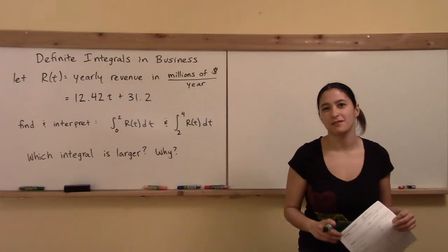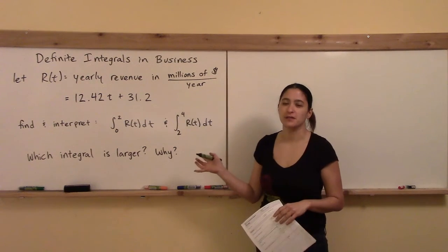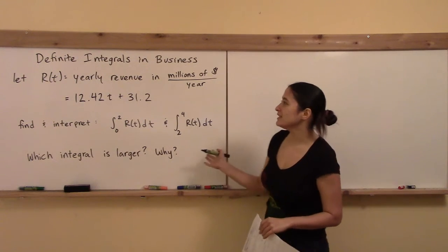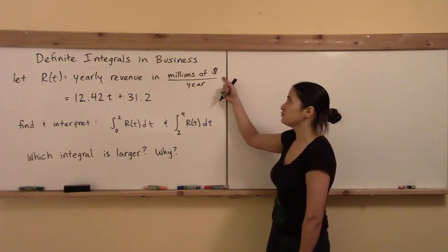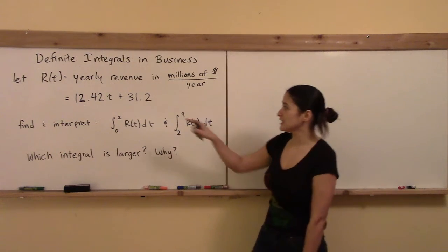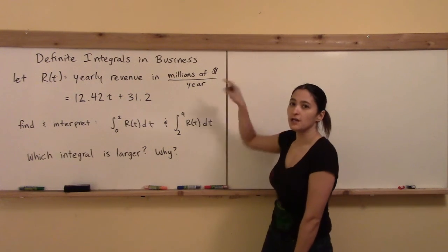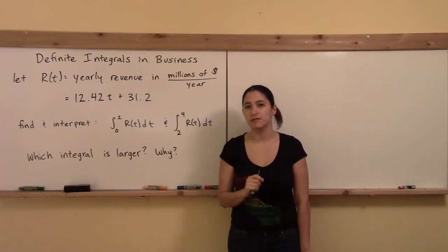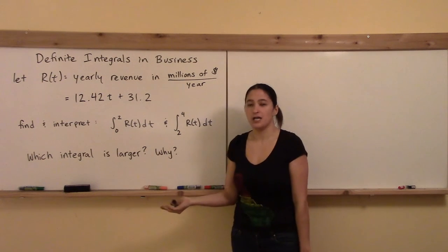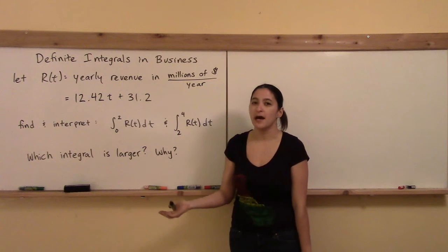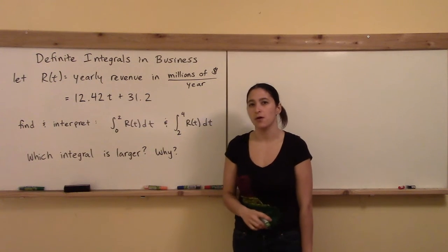In this video we're going to see some examples of where definite integrals show up in business applications. Here's an example of what we are calling a continuous income stream. Let's say we have a function R(t) which is defined as the yearly revenue that our company is making in millions of dollars per year. The fact that it says yearly revenue and the units are millions of dollars per year is a dead giveaway that this is a derivative type of quantity.